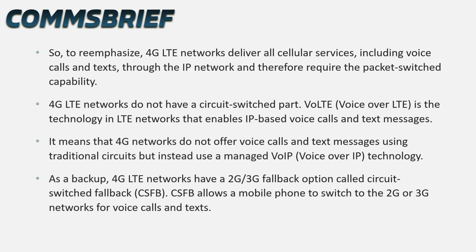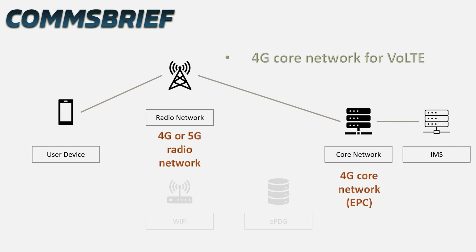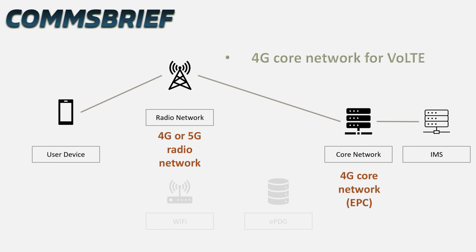As a backup, 4G LTE networks have a 2G/3G fallback option called Circuit-Switched Fallback, or CSFB. CSFB allows a mobile phone to switch to the 2G or 3G networks for voice calls and text messages. In VoLTE, the mobile phone establishes a connection with the radio network. The radio network connects to the 4G core network, EPC — Evolved Packet Core — and the EPC works with IP Multimedia Subsystem, IMS, to enable rich communications including voice calls and text messages (SMS). There is no involvement of your Wi-Fi network here — I have greyed that out so you know the Wi-Fi network is not involved in VoLTE.